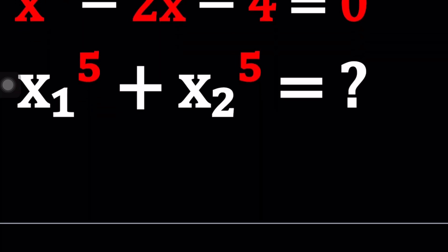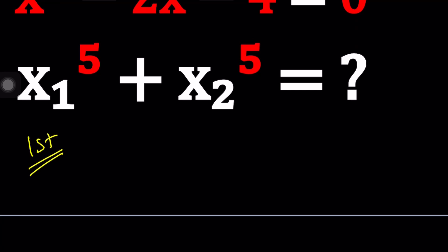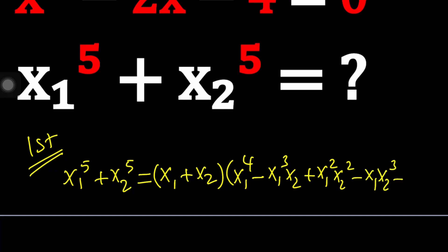So I'll be presenting two methods. Let's go ahead and take a look at the first method first. So if you're trying to find the sum of the fifth powers of two numbers, in this case the roots, we can use factoring. So x1 to the fifth plus x2 to the fifth can be factored into the following: x1 plus x2 multiplied by x1 to the fourth minus x1 to the third x2 plus x1 squared x2 squared minus x1 x2 to the third and finally plus x2 to the fourth power.